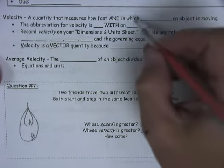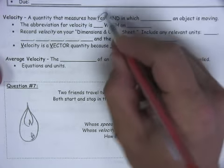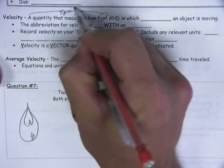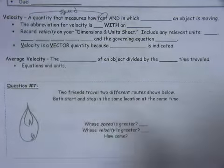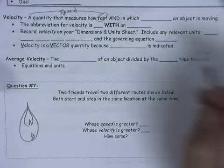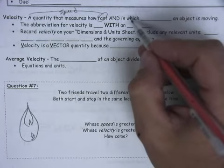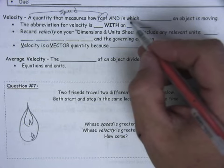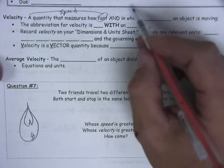So here's velocity. A quantity that measures how fast, and we've already talked about that. So this piece right here, this is just simply speed. Don't let that confuse you. That part there is just speed. But here's the difference. We're going to add something to that concept, and then once we add something to that, it's not speed anymore. It'll become velocity.